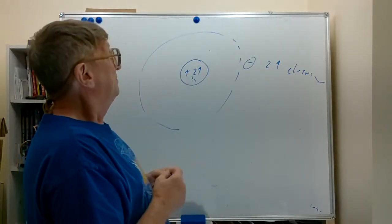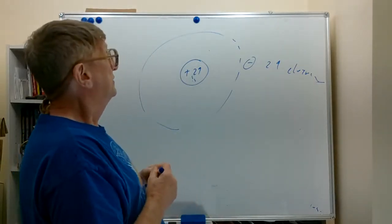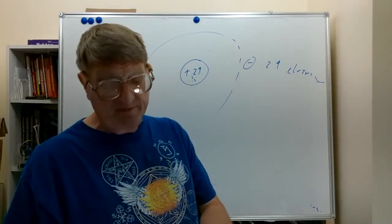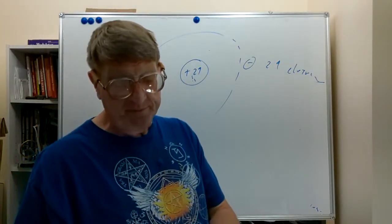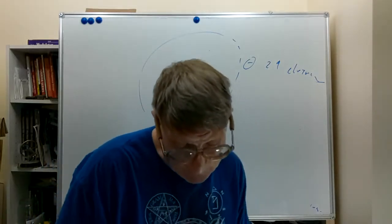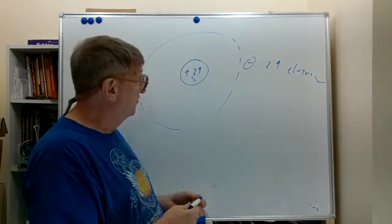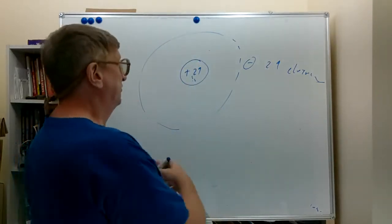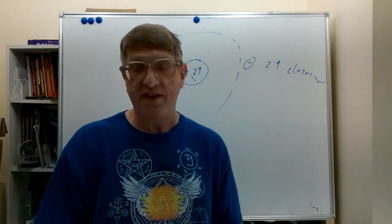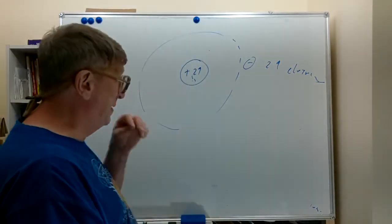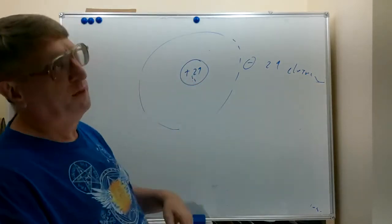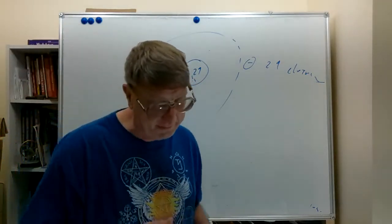The atom is the smallest particle of an element which, if divided, would still be the same element — as we just talked about. If we split the atom, we turn it into another element.